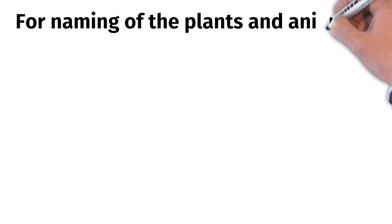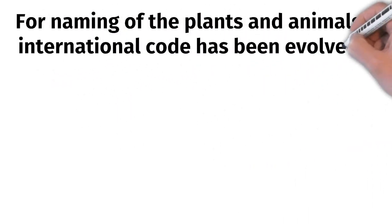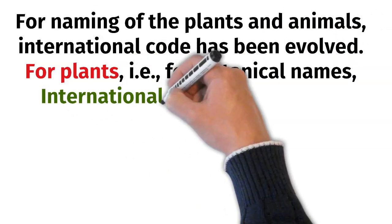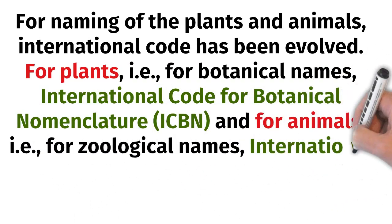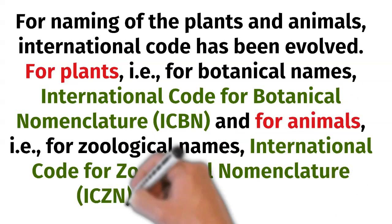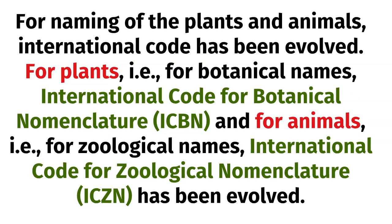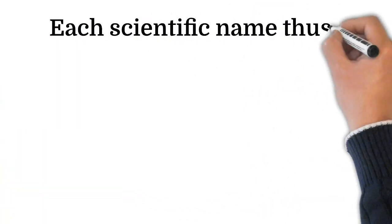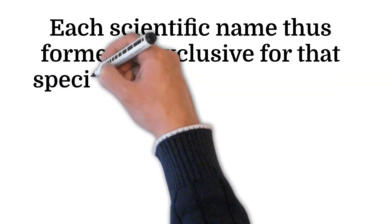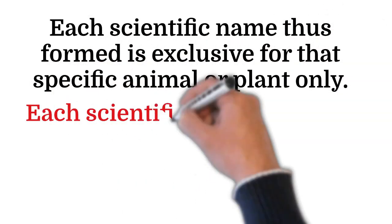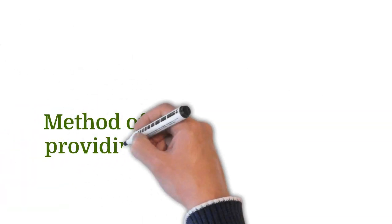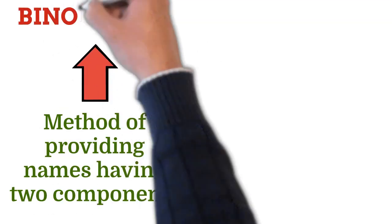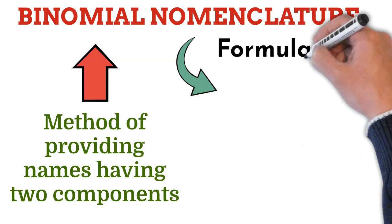The scientific naming is based on some principles and criteria which are universally accepted. For naming of plants and animals, international codes have been evolved. For plants, International Code for Botanical Nomenclature (ICBN), and for animals, International Code for Zoological Nomenclature (ICZN). Each scientific name has two components: the generic name and the specific name. This method of providing names with two components is known as binomial nomenclature, formulated by Carlos Linnaeus.